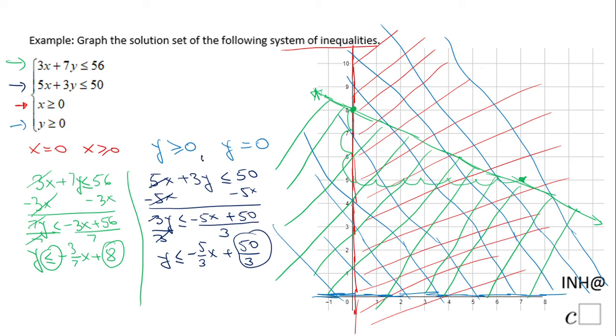That's not a very friendly y-intercept, so I'm not going to use 50 over 3. But if you notice, if I make y equals 0 here, I end up with 5x equals 50, which is going to give me x equals 10. So that will be the x-intercept, which for this equation will be 10 and 0, somewhere right here.